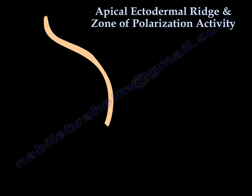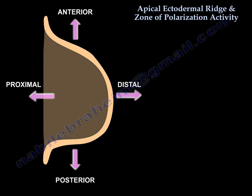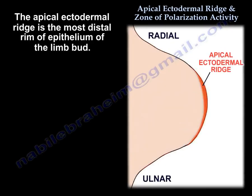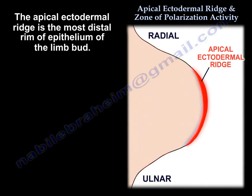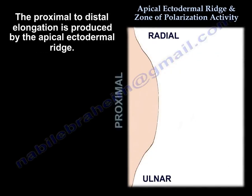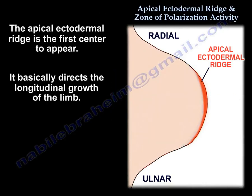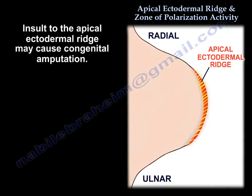The Apical Ectodermal Ridge (AER) is the most distal rim of epithelium of the limb bud. It produces proximal-to-distal elongation and is the first signaling center to appear. It directs the longitudinal growth of the limb. Insult to the Apical Ectodermal Ridge may cause congenital amputation.